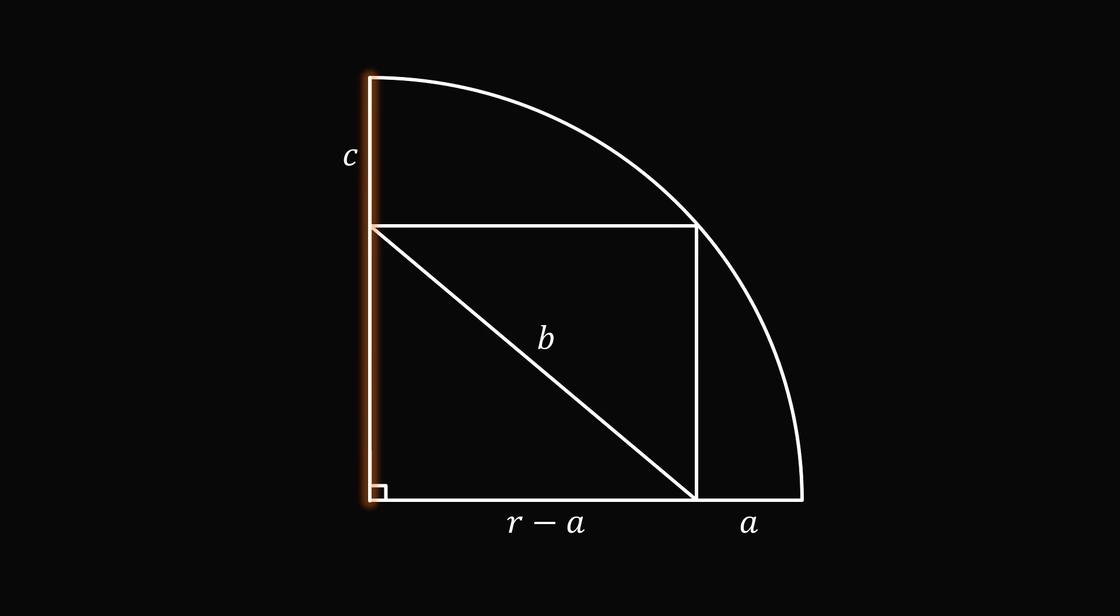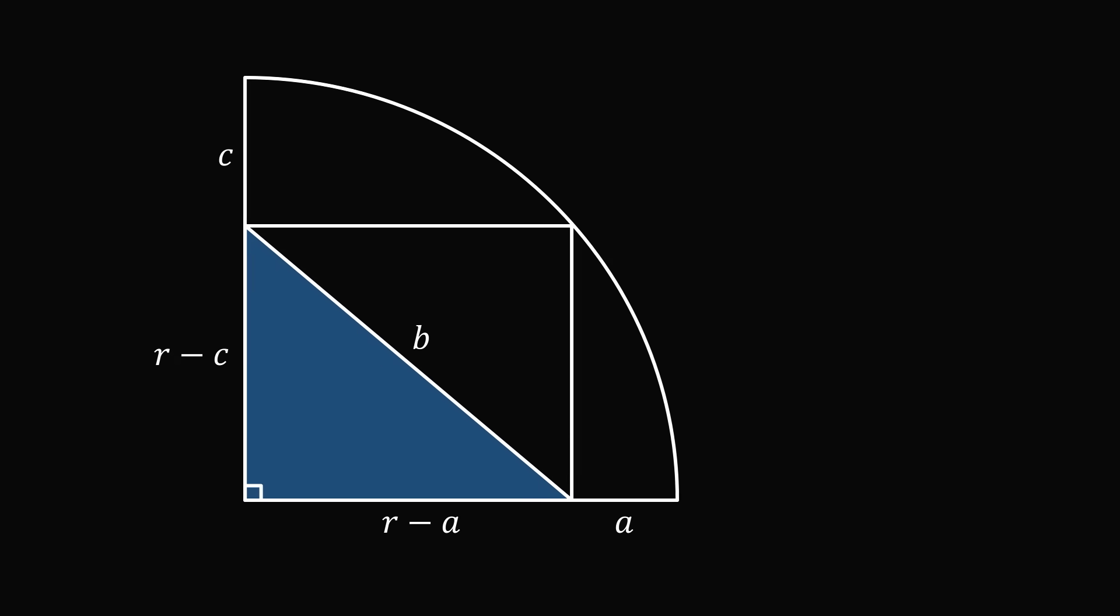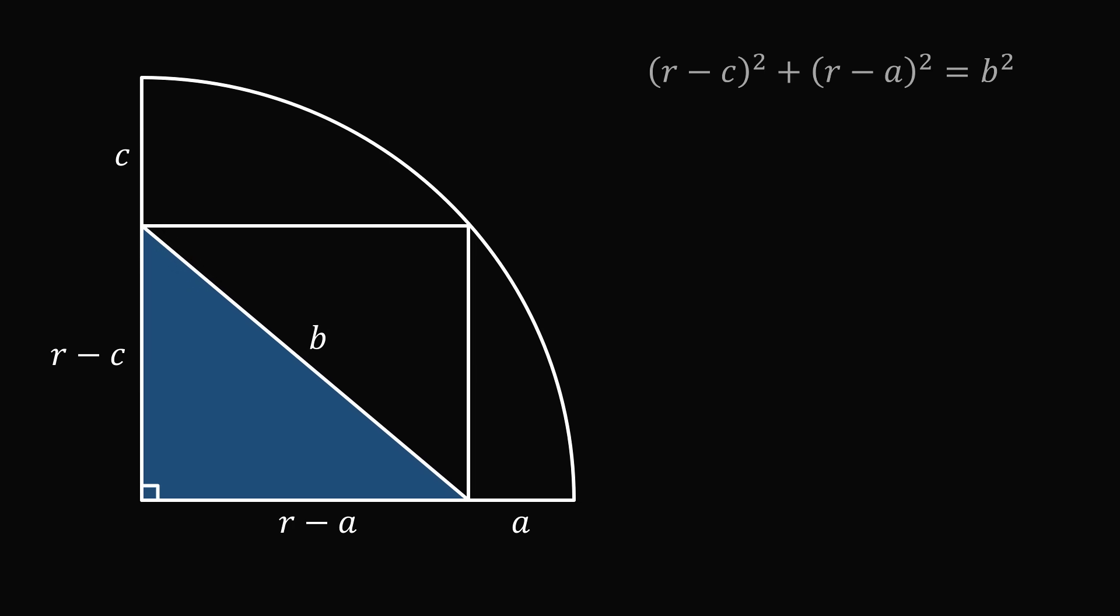Similarly, the vertical length right here is the radius of the circle, which is equal to r. If we subtract out the vertical distance c, we will get the length of the vertical side, which is equal to r minus c. We now have a right triangle, so we can apply the famous right triangle theorem. We have that the square of r minus c plus the square of r minus a is equal to b squared.